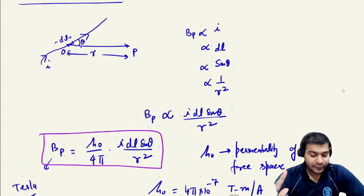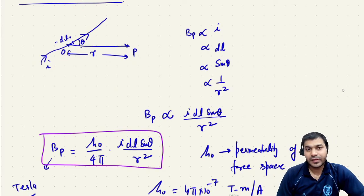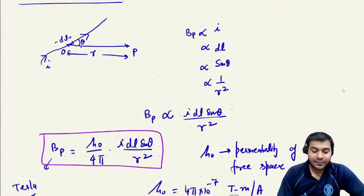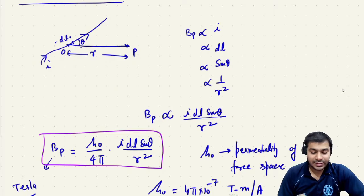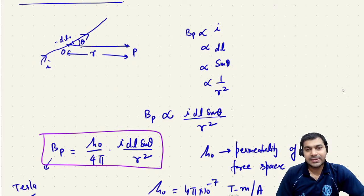The only condition we have to keep in mind is that the current flowing through the wire is constant — that is, it does not change with time. So the magnetic field we are getting at point B is also constant in magnitude at a particular point.